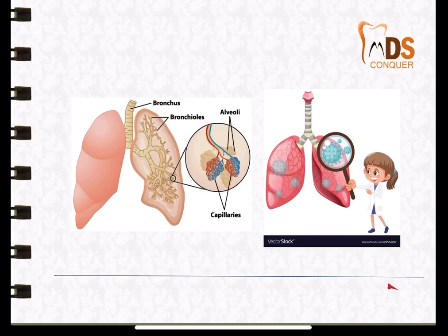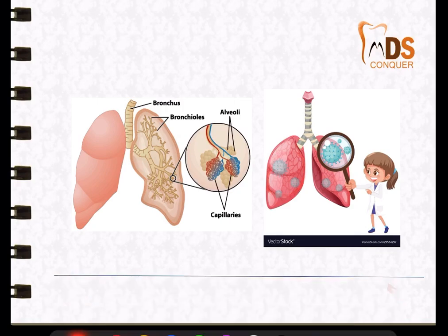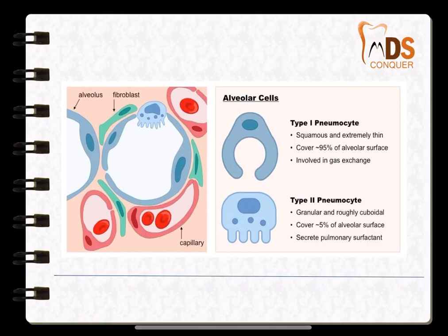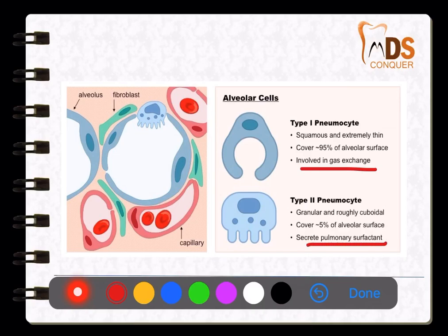The main site of target of this dreadful virus is the alveoli, which are present in the lungs. The alveoli actually have two types of cells: type 1 and type 2 pneumocytes. Type 1 pneumocytes are responsible for gaseous exchange, whereas type 2 pneumocytes secrete the pulmonary surfactant. These are the main two types of cells where this virus targets. In the early stage, type 2 pneumocytes are mainly affected, and in later stages type 1 is also affected.